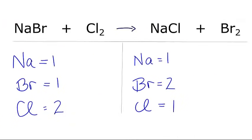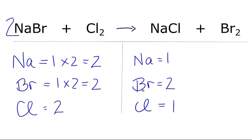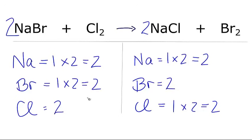In this single displacement reaction, let's start by balancing the Br atoms. I have 1 Br on the reactants and 2 on the products. So I'll put a 2 in front of the NaBr — 1 times 2 equals 2. The Brs are balanced, but the Na is not balanced either. Let's fix the Na's on the product side. I need 2, so 1 times 2 gives me 2 Na's, but I also have to change the Cls — 1 times 2 gives me 2 chlorine atoms. The chlorine atoms are balanced, the Brs are fine, and the sodiums are balanced as well.